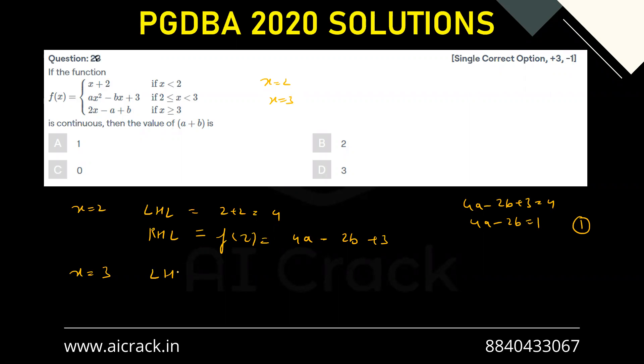Now at x equals to 3, LHL and RHL equals to f of 3. LHL would be 9a minus 3b plus 3, and f of 3 and RHL would be 2 into 3, basically 6, 6 minus a plus b.